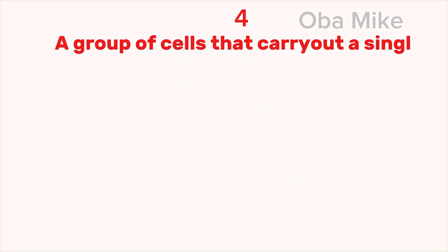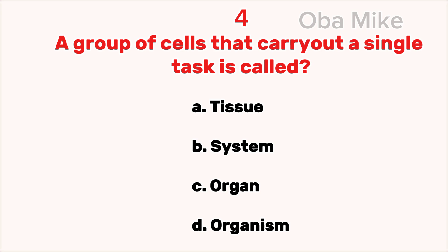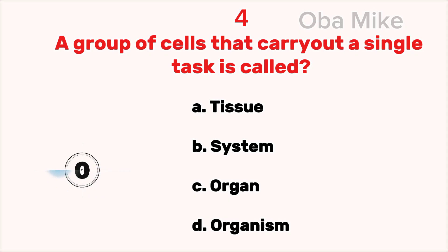4. A group of cells that carry out a single task is called A. Tissue, B. System, C. Organ, D. Organism. The correct answer is A. Tissue.